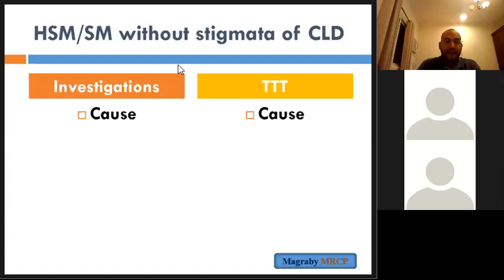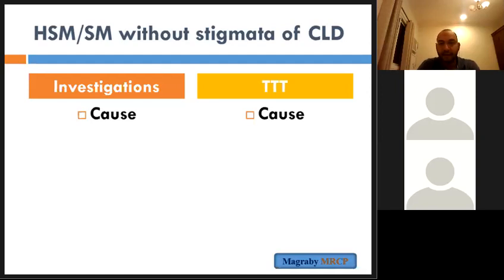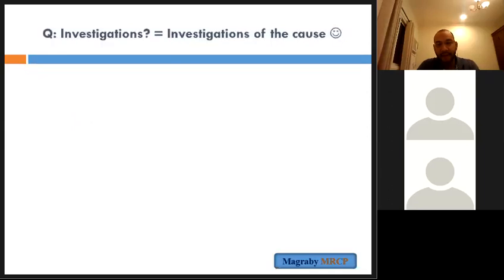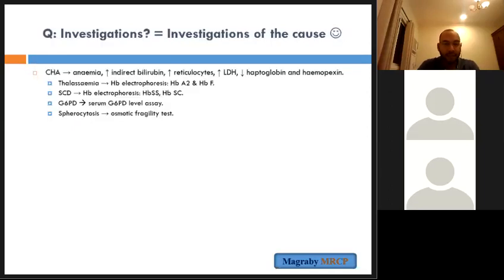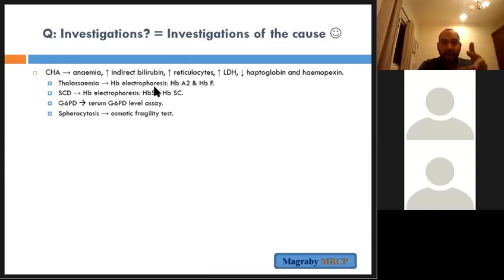Investigations and treatment are directed at the cause. For chronic haemolytic anaemia: check CBC and blood film; haemolytic indices show anaemia, indirect hyperbilirubinaemia, elevated reticulocytes, elevated LDH, and low haptoglobin. For thalassaemia: haemoglobin electrophoresis. For sickle cell disease: haemoglobin electrophoresis. For G6PD deficiency: serum G6PD level.